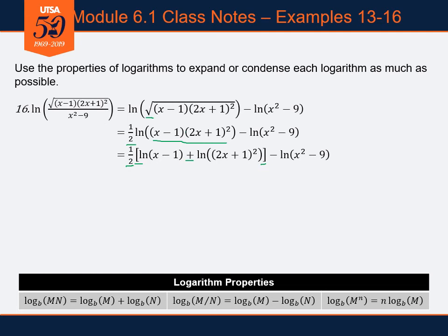Looking at the natural log of x minus one, we can't split that — we're done with that one. But the natural log of two x plus one all squared — that's a power on a logarithm, so we can bring that power down. Everything else comes down the same: one half times natural log of x minus one, plus two times the natural log of two x plus one, minus natural log of x squared minus nine.